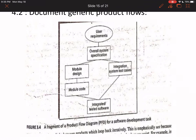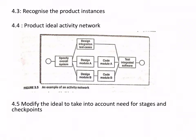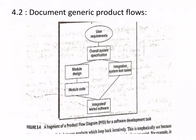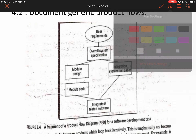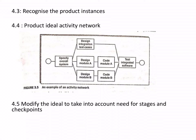Step 4.3: recognize product instances. There may be many instances leading to one product. In a generalized form a product looks simple, but in real time there can be many instances or intermediate stages leading to the same product. You have to take those instances into consideration and plan accordingly. Step 4.4: create a product/activity network.